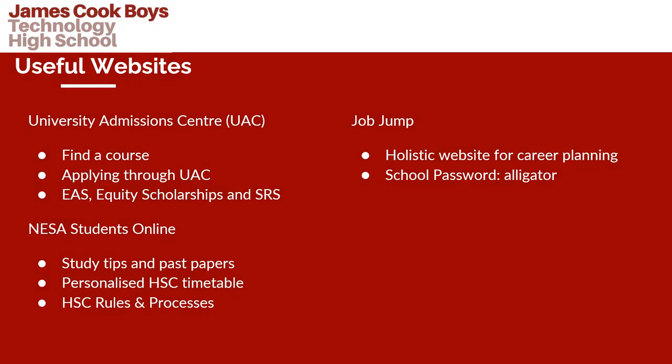Some useful websites you can access are the University Admissions Centre, to find a course or apply through UAC. You can also fill out applications for the Educational Access Scheme, Equity Scholarships and the School Recommendation Scheme on this site. NESA Students Online is another useful website which provides study tips and past papers, personalised HSC timetables, and access to HSC rules and processes. Another useful website is JobJump, a holistic website for career planning — you can access it using the school password provided in this video.